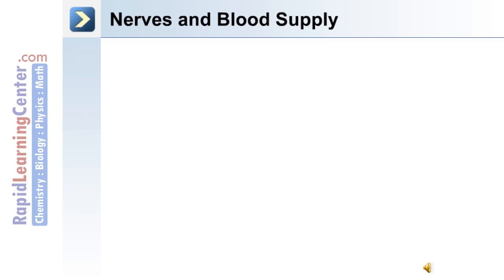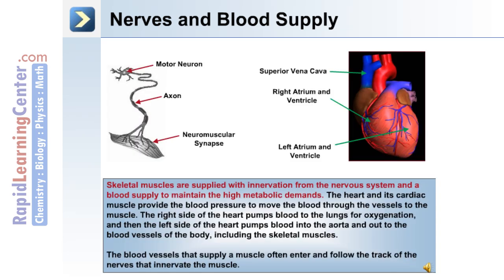Skeletal muscle innervation and blood supply: skeletal muscles are supplied with innervation from the nervous system and a blood supply to help maintain their high metabolic demands. The heart and its cardiac muscle provide the blood pressure to move blood through the vessels to the muscle. The right side of the heart pumps blood to the lungs for oxygenation, and the left side pumps blood into the aorta and out to the blood vessels of the body. The blood vessels that supply a muscle often enter and follow the track of the nerves that innervate that particular muscle.